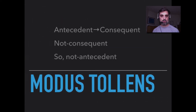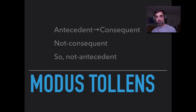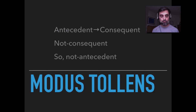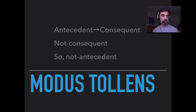So this is modus tollens in English: if antecedent, then consequent; not consequent; therefore not antecedent. Modus ponens said if the antecedent is true, then so is the consequent. Modus tollens just reverses that — if the consequent is false, then the antecedent is also false. Because if the antecedent were true, you would have been able to get the consequent. But we know the consequent isn't true, so you can't have the antecedent either. This is a good, valid form of reasoning.